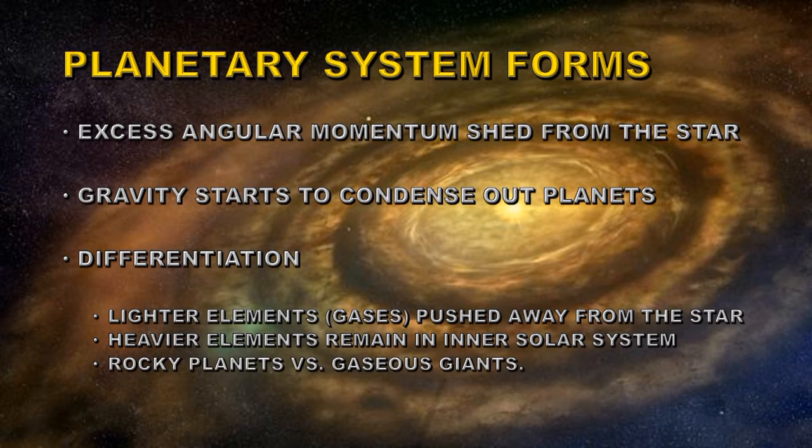So therefore you will tend to get rocky planets formed in the interior of a stellar system, and gaseous planets in the outer part. You can see that in our solar system with the four rocky planets Mercury, Venus, Earth and Mars in the inner solar system, and the gas giants Jupiter, Saturn, Uranus and Neptune in the outer part of the solar system.